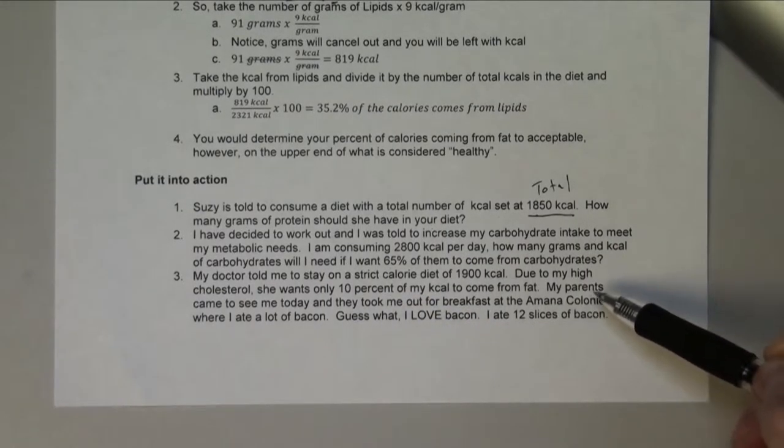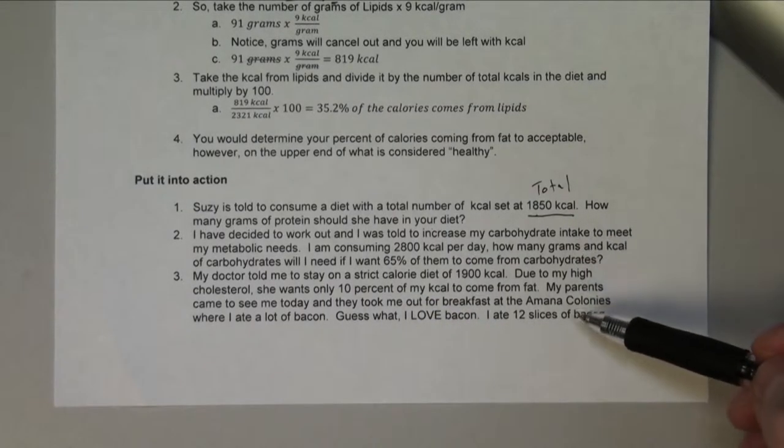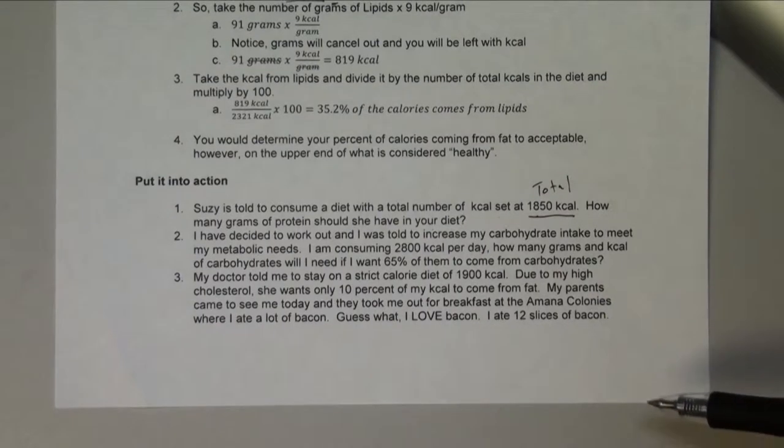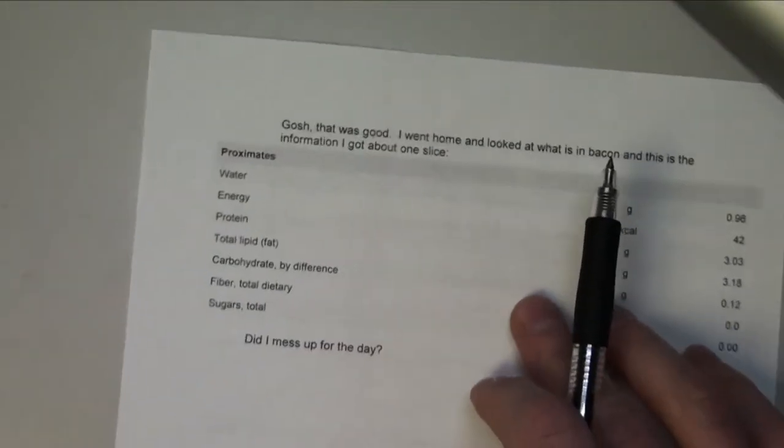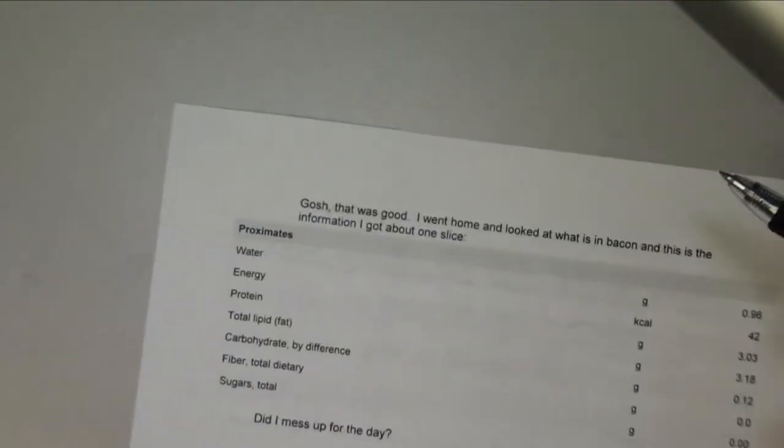But let's say my parents came to visit me, or her parents came, and they took them to the Mennonite colonies, where they have lots of lovely fatty bacon. And so when they went out, she ate 12 slices.